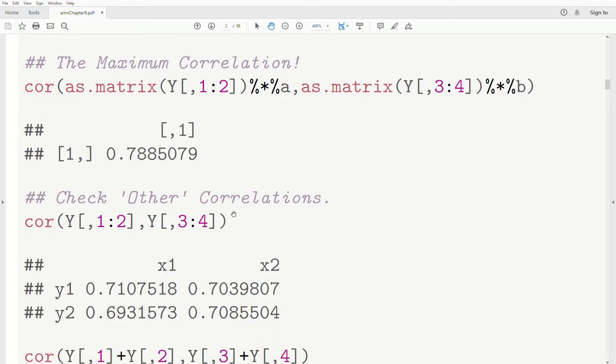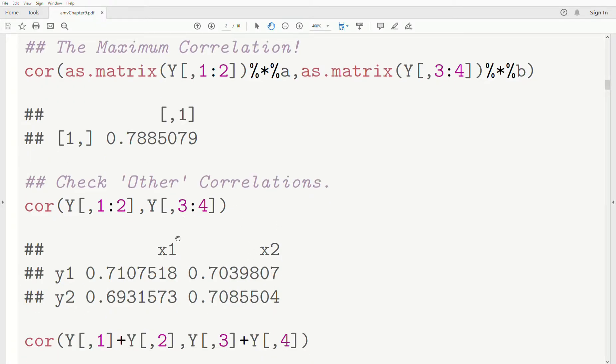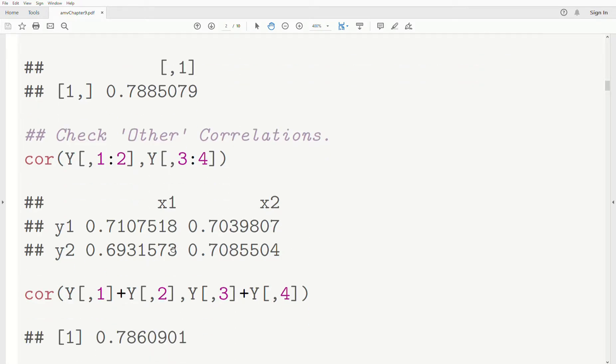First, let's just go through some brief checks. Let's look at individual correlations between these sets of variables. So the correlation between Y1 and X1 is 0.71. Y1 and X2 is 0.7. Anyway, none of these will ever be this big.